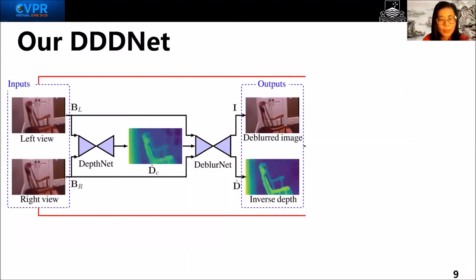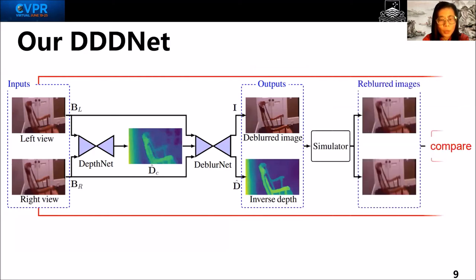Our model is named DDDNet. We take the output of the DP sensor, which is a DP pair, and pass it through our network to compute the deblurred image and the depth. To validate the quality of our output, we re-simulate the DP image using our simulator and compare them with the input.